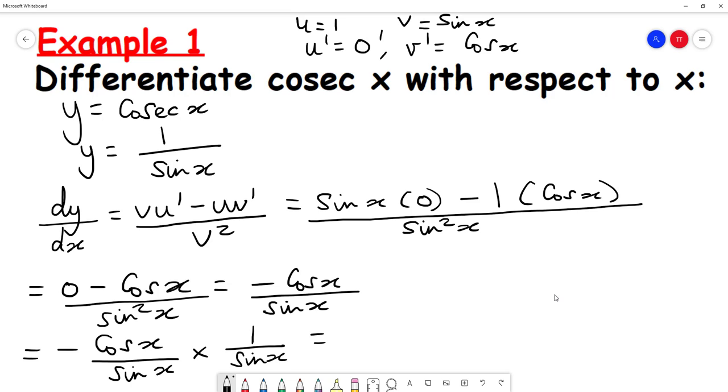Now, cos over sine is cot, so I get minus cot x, and 1 over sine x is cosec x. And that's the derivative of cosec x - minus cosec x times cot x.